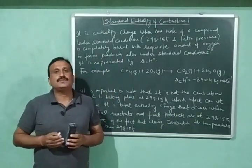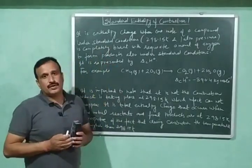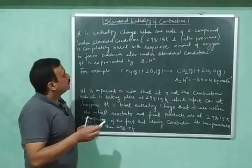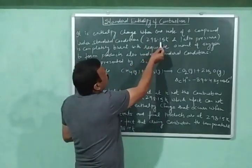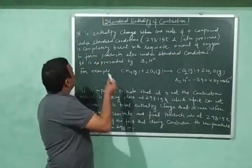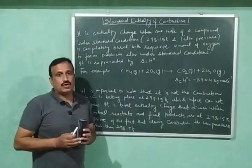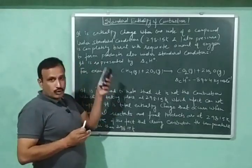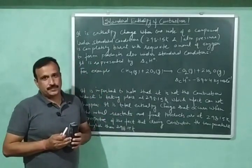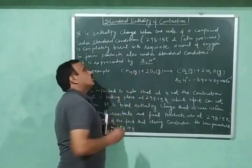Standard Enthalpy of Combustion is the enthalpy change when one mole of a compound under standard conditions — which means 298.15 Kelvin temperature and 1 atmospheric pressure — is completely burnt with the requisite amount of oxygen to form products which are also under standard conditions. It is represented by Delta C H⁰.